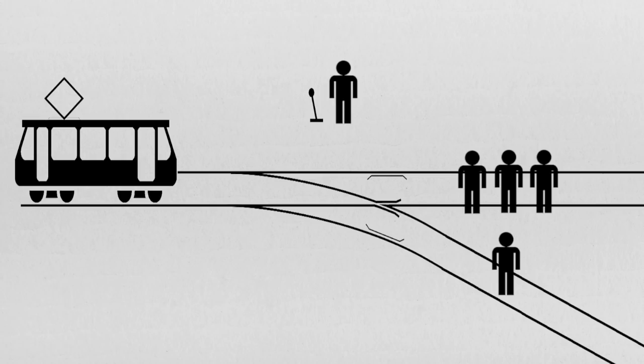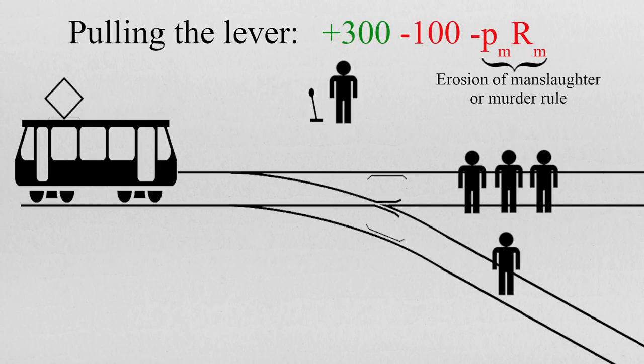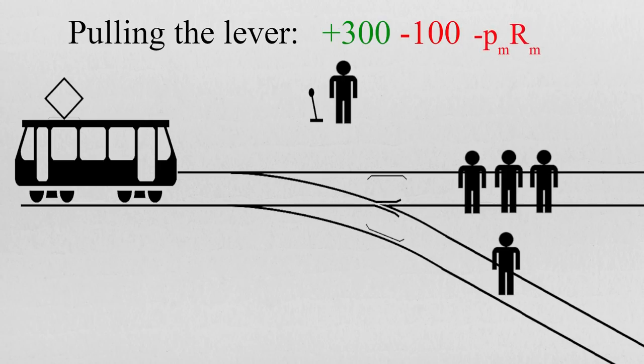The trolley problem appears to qualify for its use, so if one does not pull the lever, he will probably be eroding this rule, adding a negative utility component to the calculations. On the other hand, by pulling the lever, one could be accused of manslaughter or murder, since he is causing the death of a single person on the sidetracks. Although in a real-case scenario, it would be highly improbable one would get punished for such an act, or that the act would be perceived as a murder.